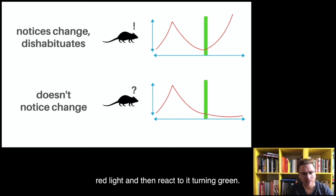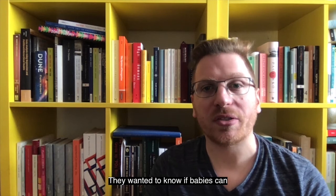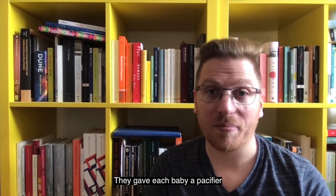To give you an example that's not very sophisticated, I can get used to seeing your red light and then I can react to it turning green, only if I can tell red from green. And if I can't, I will not react to this change.